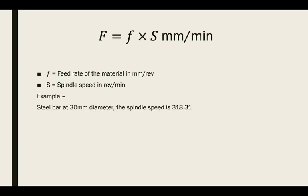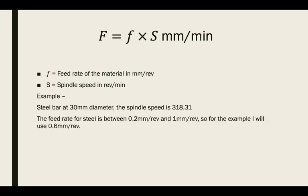As an example, for our steel bar at 30mm diameter, the spindle speed is 318.31 RPM as already calculated. The feed rate for steel is between 0.2 and 1 millimeter per revolution — again from the chart at the end. For this example we'll use 0.6 as it is in the middle. So the feed rate equals 0.6 times 318.31, which gives us 190.99 millimeters per minute.